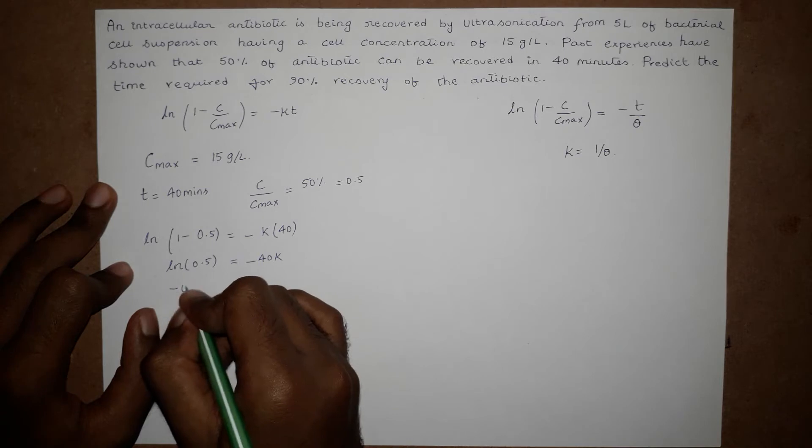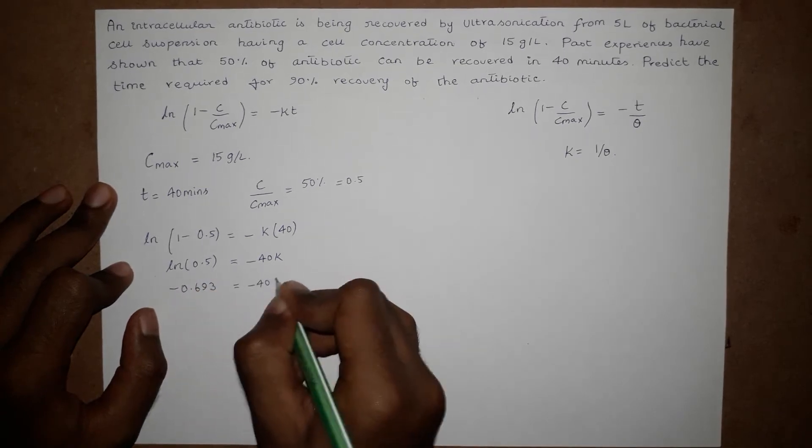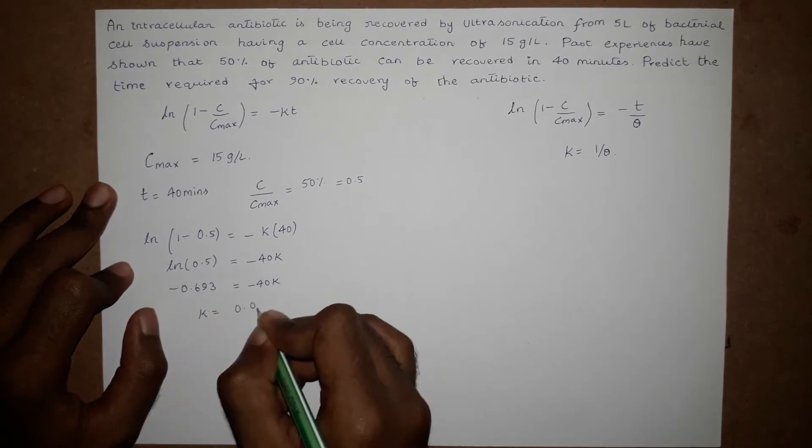ln of 0.5 equals negative 0.693, which equals negative 40K. We get the value of K to be around 0.0173 minutes raised to the power minus 1.